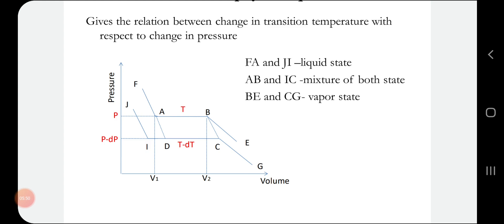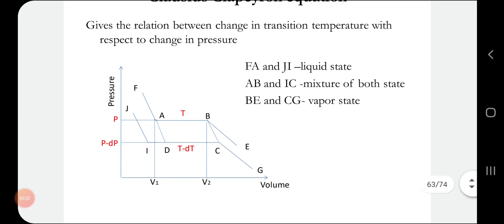So here we have two indicator diagrams. The first is the curve F, A, B, E at pressure P. The second is the curve J, I, C, G at pressure P minus dP. These two isothermal curves together form a Carnot cycle, which I am labeling A, B, C, D.